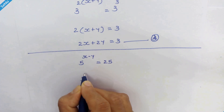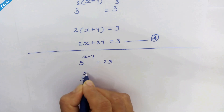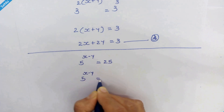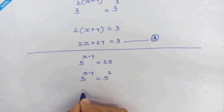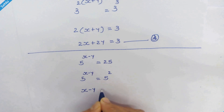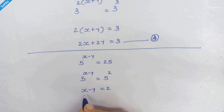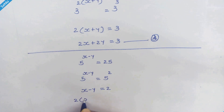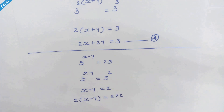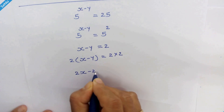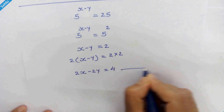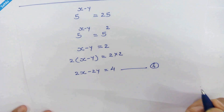We can write this as 5 raised to x minus y is equal to 5 squared. It's the same base again, so we equate the exponents: x minus y is equal to 2. Multiplying both sides by 2, we get 2x minus 2y is equal to 4. Let's call this equation 4.